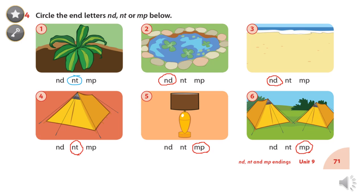Picture four — it's a tent, NT. Five — it's a lamp, MP. And the last one — it's a camp, MP.